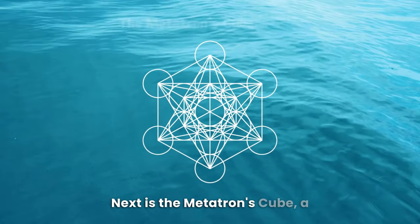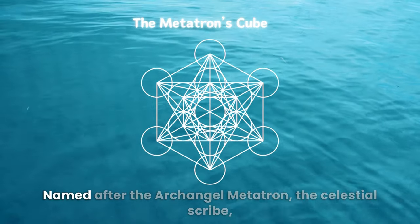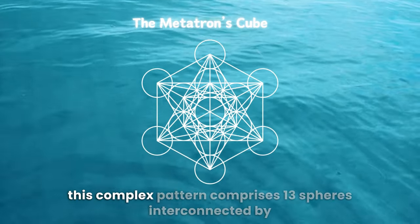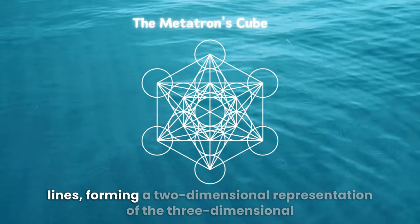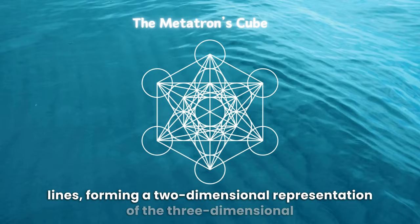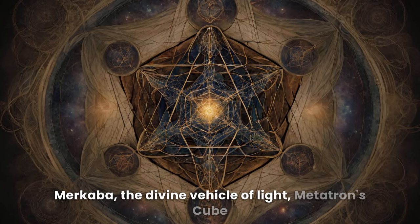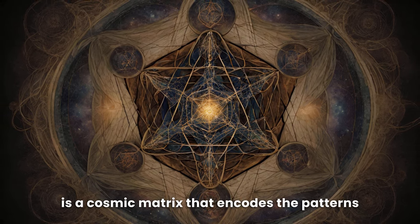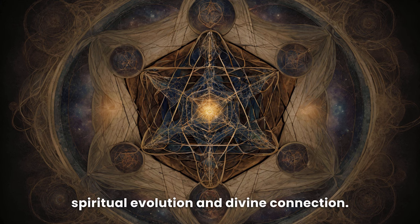Next is the Metatron's Cube, a geometric marvel of profound significance. Named after the archangel Metatron, the Celestial Scribe, this complex pattern comprises 13 spheres interconnected by lines, forming a two-dimensional representation of the three-dimensional merkaba, the divine vehicle of light. Metatron's Cube is a cosmic matrix that encodes the patterns of creation, serving as a compelling symbol for spiritual evolution and divine connection.